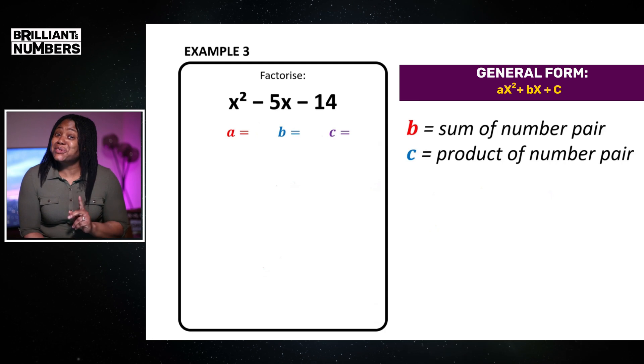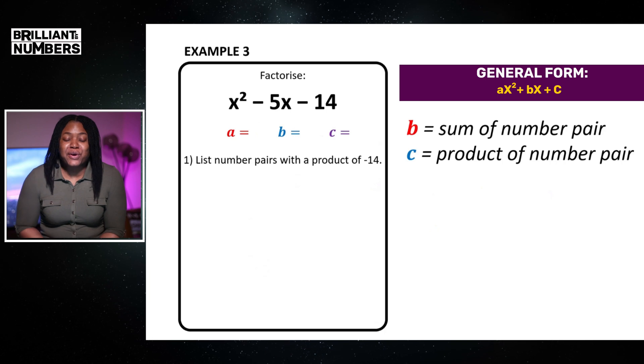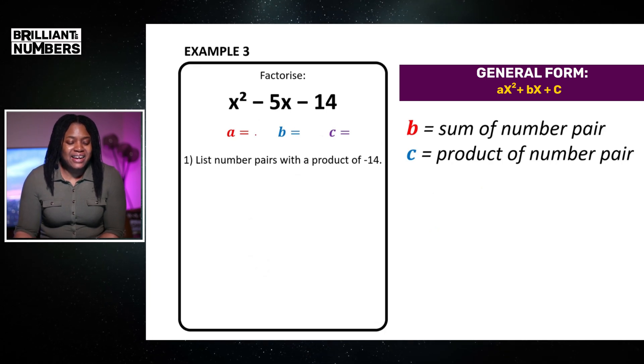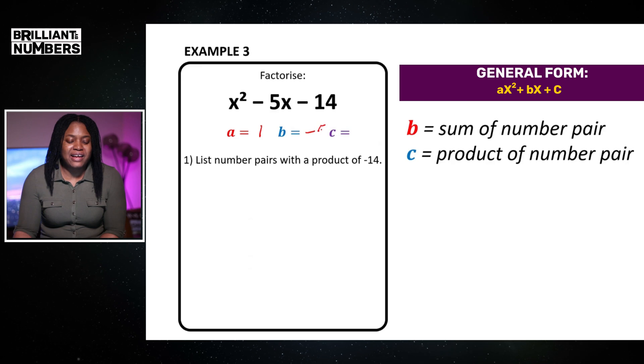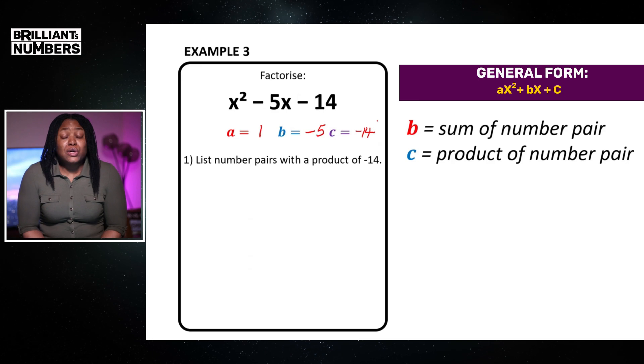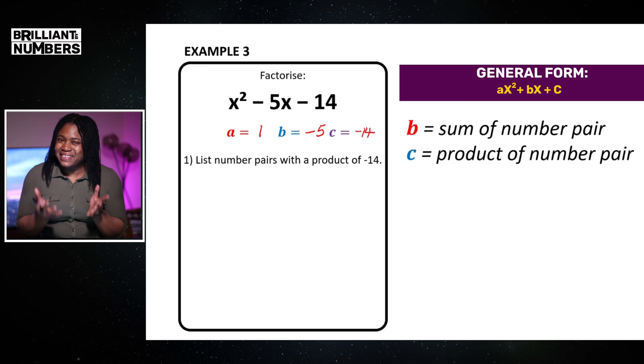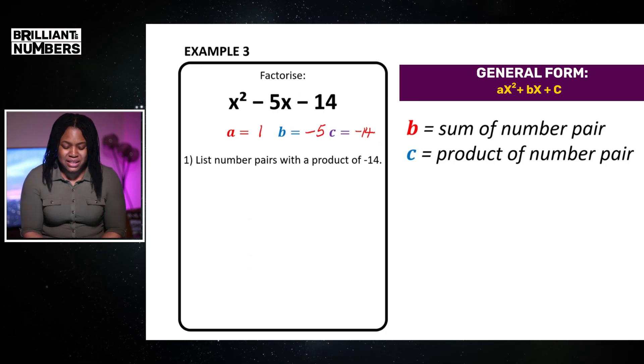So, for our final example, we are asked to factorize x squared minus 5x minus 14. I hope you've noticed that now our b term and also our c term are negative. So, we're going to write down what is a, a is 1, b is minus 5 and c is minus 14. We're going to do what we've always done and list our number pairs of the positive first and then manipulate which ones need to be negative.